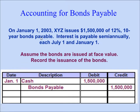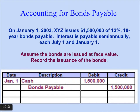On January 1, 2003, XYZ issues $1,500,000 of 12%, 10-year bonds payable. Interest is payable semi-annually, each on July 1 and January 1. Assume the bonds are issued at face value. When a bond is issued, the company receives cash, so we debit Cash for $1,500,000 and credit Bonds Payable for $1,500,000. Cash is debited as an asset account, and Bonds Payable is credited as a liability.